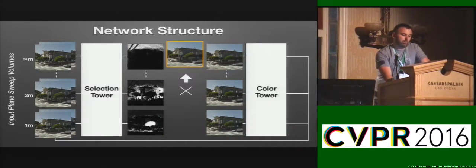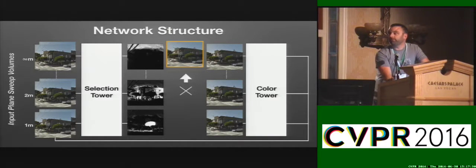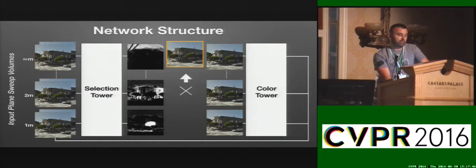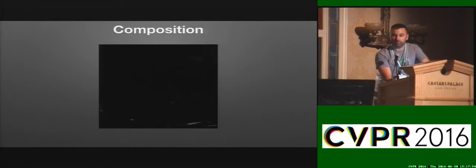The input to our network is the plane-sweep volume of the input images reprojected to the target camera at a variety of depths. The standard plane-sweep stereo algorithm might use sum of square differences or normalized cross-correlation to estimate the depth. Instead, we aim to learn the similarity function from lots of data. The network predicts both a depth distribution and set of color hypotheses for each pixel, and thus consists of two towers. The selection tower learns to produce a selection probability for each pixel within each depth plane, while the color tower learns to combine and warp pixels across the input images. The outputs from both towers are multiplied and summed to produce the final image, which we visualize as a per-pixel-weighted sum of the intermediate color layers.